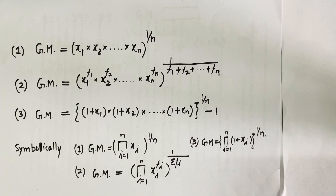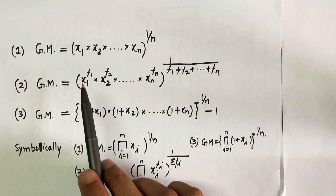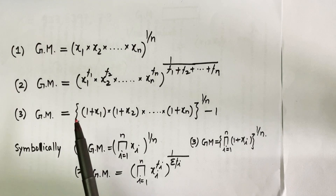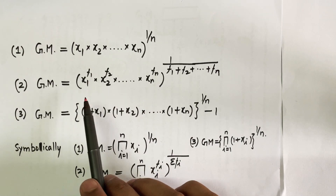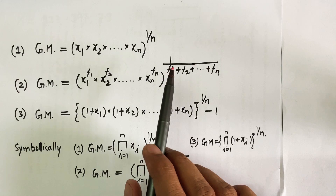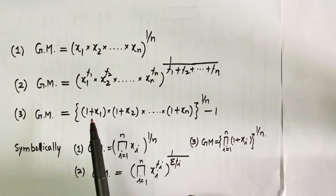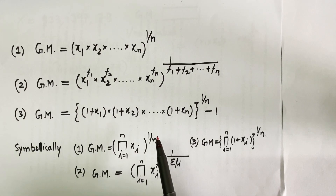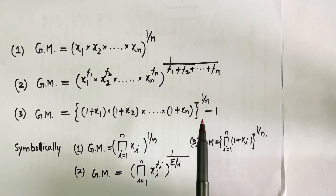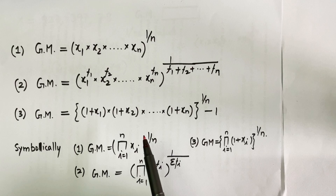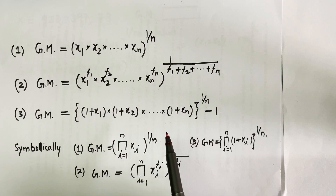If the data is grouped, meaning you have the variable in the form of X and frequencies in the form of F, the geometric mean is derived as the variable raised to the power of its frequency, with 1 divided by the sum of frequencies. A third modified formula applies when talking about rate of change where values are given in percentage.